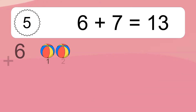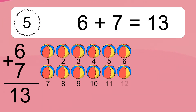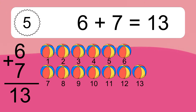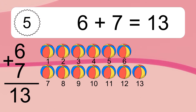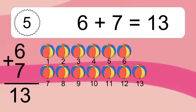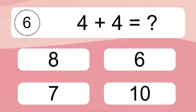6 plus 7 equals what? 6 plus 7 equals 13. Let's count it. 1, 2, 3, 4, 5, 6, 7, 8, 9, 10, 11, 12, 13.